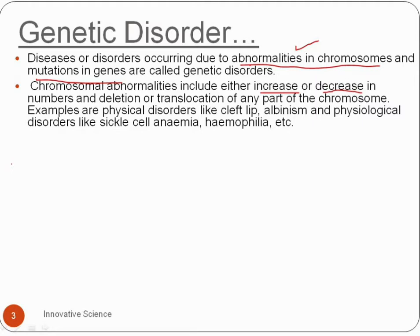Examples of abnormalities include physical disorders like cleft lip and albinism, and physiological disorders like sickle cell anemia and haemophilia.